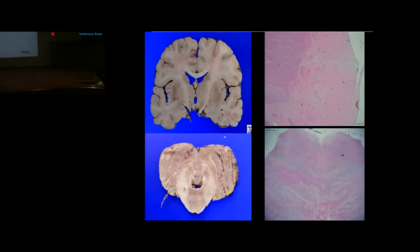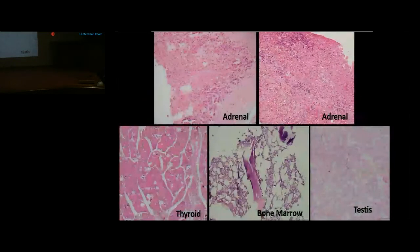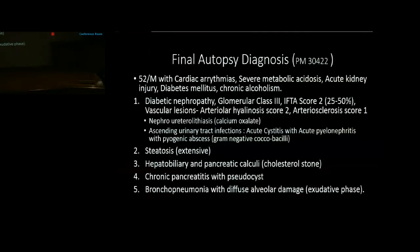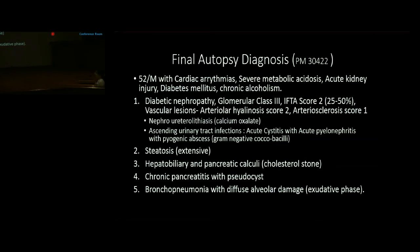The brain was grossly and microscopically unremarkable. The adrenal glands showed areas of hemorrhagic necrosis and inflammation. Thyroid and bone marrow were unremarkable. Testicular atrophy was noted. Final autopsy diagnosis: diabetic nephropathy glomerular class 3, IFTA score 2, arteriolar hyalinosis score 2, arteriosclerosis score 1, with nephroureterolithiasis of calcium oxalate type leading to ascending urinary tract infection, extensive hepatic steatosis, hepatobiliary and pancreatic calculi of cholesterol type, chronic pancreatitis with pseudocyst, and bronchopneumonia with diffuse alveolar damage (exudative phase).